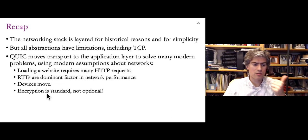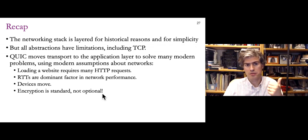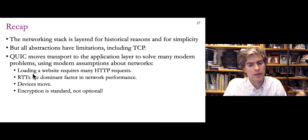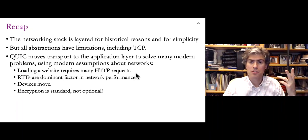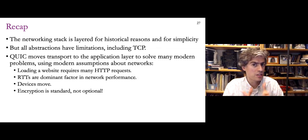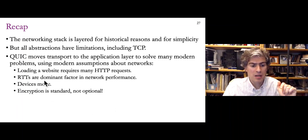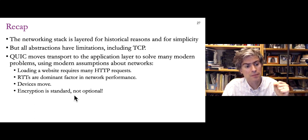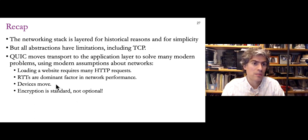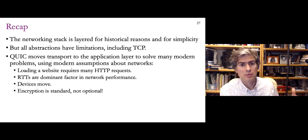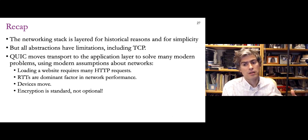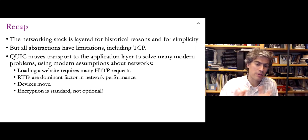Encryption is now standard — once that's true, having two handshakes instead of one becomes obviously inefficient. Loading a website requires many HTTP requests, so we should be able to fetch many documents from one connection rather than maintaining all these parallel connections with overhead. Round trip times are a dominant factor in network performance, so if we're making two round trips to establish a connection, we need to find a better way. And devices move — QUIC provides an alternative way to support a connection handing off between different IP addresses using connection IDs.